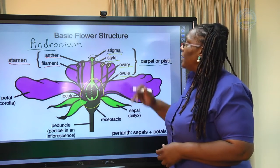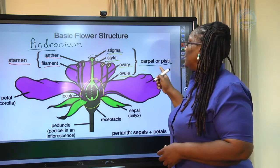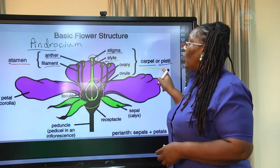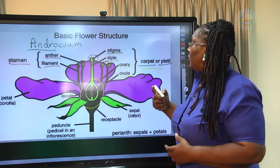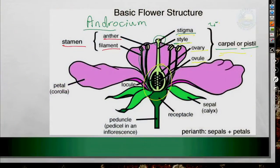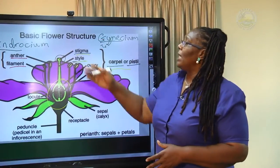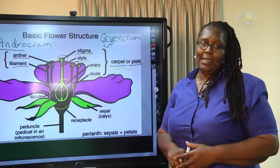The collection of carpels is known as the gynoecium — G-Y-N-E-C-I-U-M. You hear the word 'gyne'? That means female reproductive structure. So we have the androecium and the gynoecium. At CAPE level these terms are not strictly required, but you may see them.